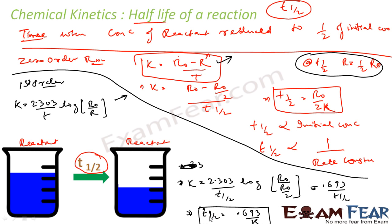A very important observation: in a first-order reaction, the half-life is independent of the initial concentration — there is no initial concentration term in T½ = 0.693 / K. It is only inversely proportional to the rate constant K. This contrasts with zero-order, where T½ is directly proportional to initial concentration.